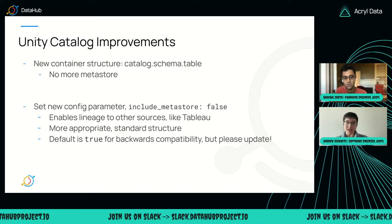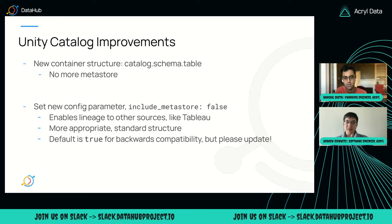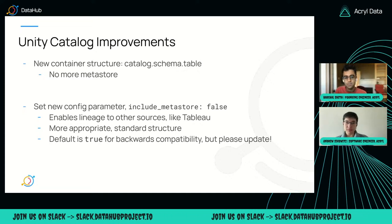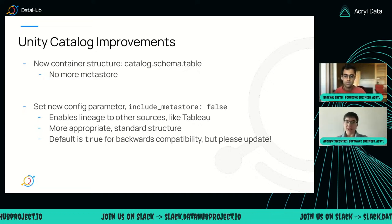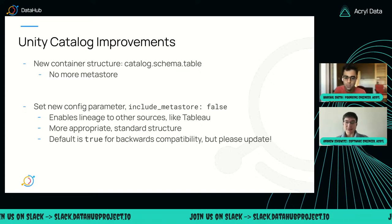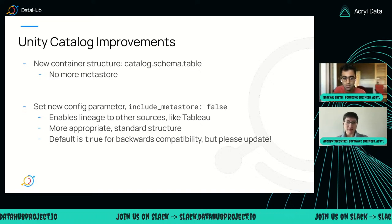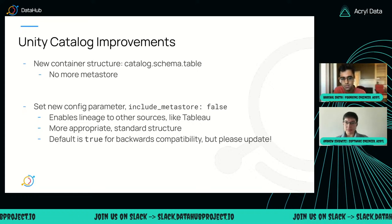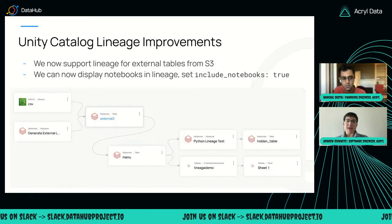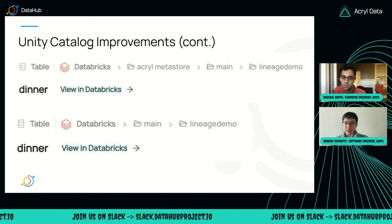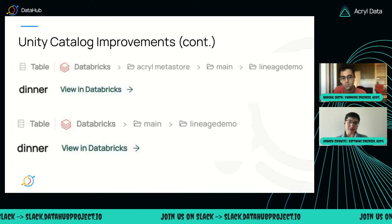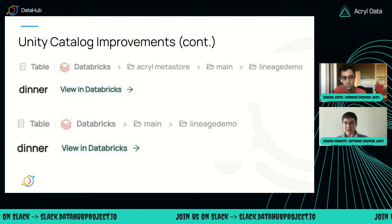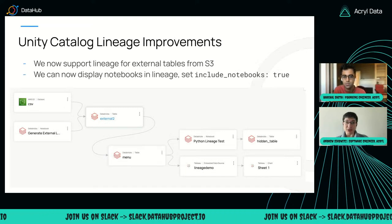So that's the boring part. The more exciting part is what you can do now that you have this structure. If you look at this, this is just the new structure — before we had the metastore included, now we don't. And moving to the next slide, we also support a few more lineage improvements.